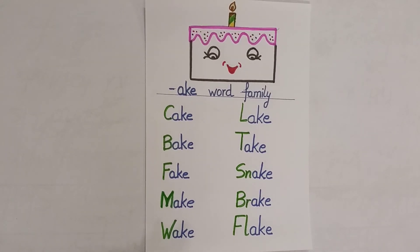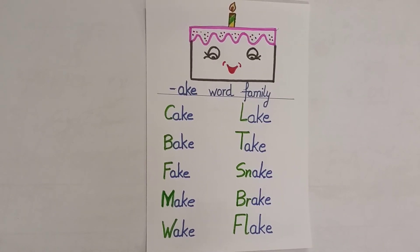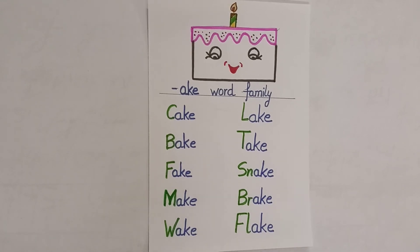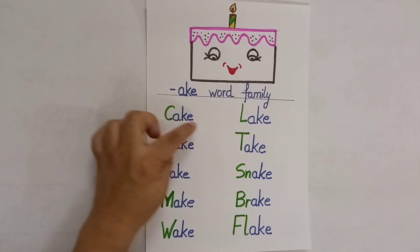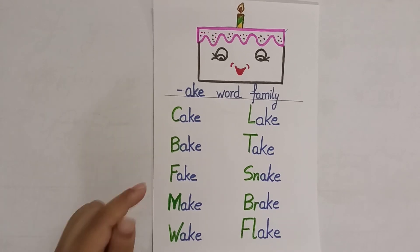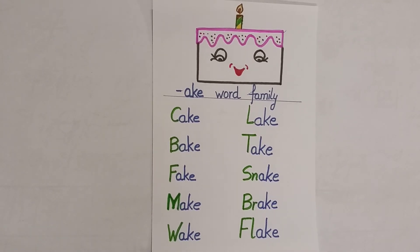You can see here I have used two colors to clearly differentiate. The -ake family group is in blue color, and the rest of the words are in green color.